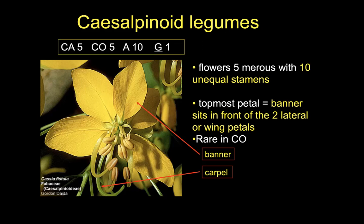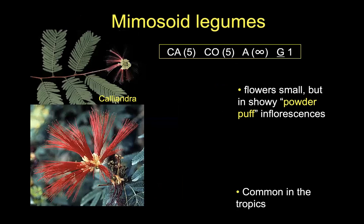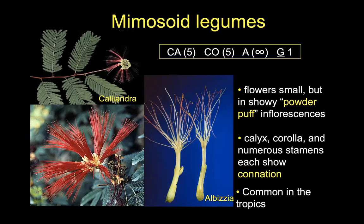There are some examples of caesalpinioid legumes to share, though I don't think there are any of these in Colorado. The mimosoid legumes are critical in lots of other parts of the world — we'll see some at Denver Botanical Garden. This group has really minimized the calyx and corolla and maximized the number of stamens to create these powder-puff inflorescences, making bottle-brush-looking structures that can be really showy. The stamens are doing the bulk of the visual display. These are just a different way of recruiting animal pollinators — we see a lot of this in the tropics, but not in Colorado.